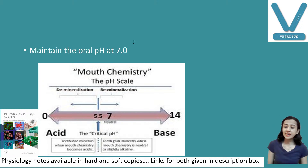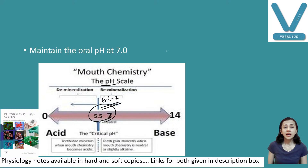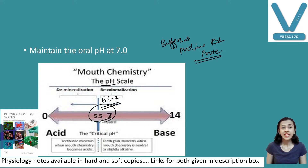Next function: saliva maintains oral pH at 7. All the enzymes act at pH 6.5 to 7 — this is the critical pH of saliva. This pH is maintained because certain buffers and proline-rich proteins are present in saliva. These proline-rich proteins and buffers bind with toxic substances and maintain pH at 6.5 to 7.